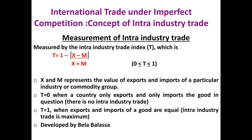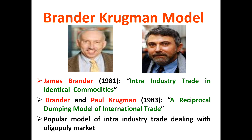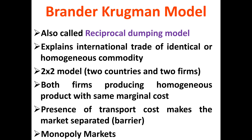There are a few theories that utilize this framework of intra-industry trade, and we are going to see two such theories. We will start with the Brander-Krugman model, sometimes also known as the reciprocal dumping model. James Brander in 1981, and Brander and Krugman in 1983 — it is a popular intra-industry trade model using the framework of an oligopolistic market structure.